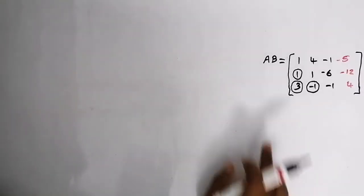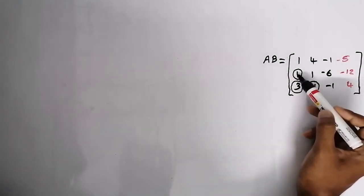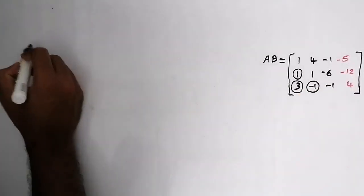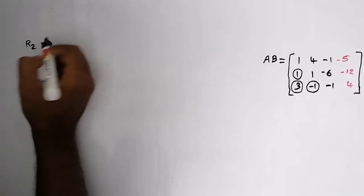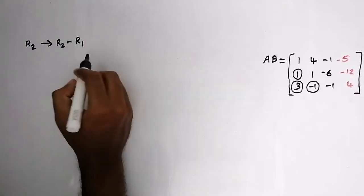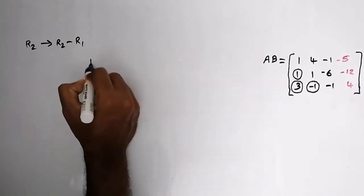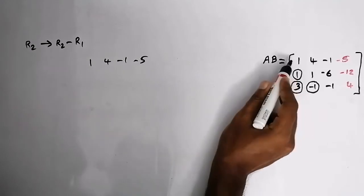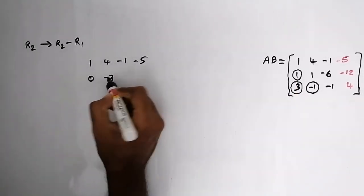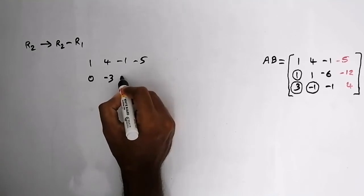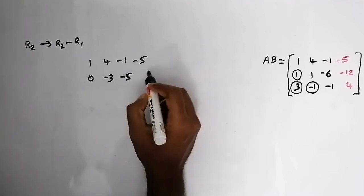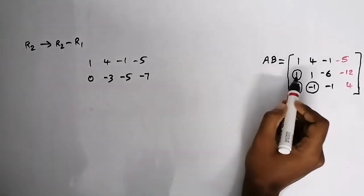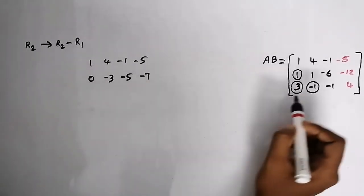To make the element in row 2 column 1 equal to zero, we perform the row operation R2 becomes R2 minus R1. The first row stays the same: 1, 4, minus 1, minus 5. The second row becomes: 1 minus 1 equals 0, 1 minus 4 equals minus 3, minus 6 minus (minus 1) equals minus 5, and minus 12 plus 5 equals minus 7. We have now made that element zero.